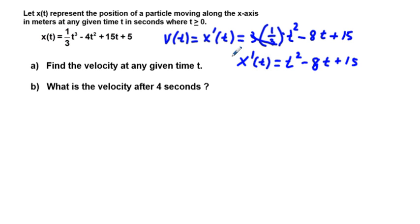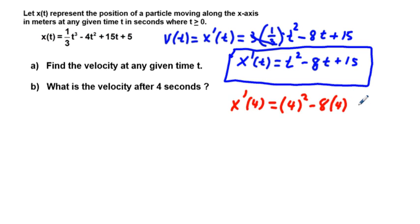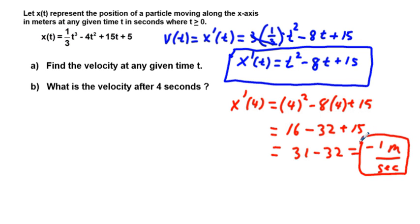For part B, we find the velocity after 4 seconds. We plug t equals 4 into the velocity function: x prime of 4 equals 4 squared minus 8 times 4 plus 15, which gives us 16 minus 32 plus 15. That equals 16 plus 15 minus 32, which is 31 minus 32, equaling negative 1 meters per second. That's our velocity at t equals 4 seconds.